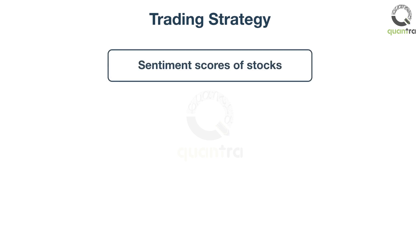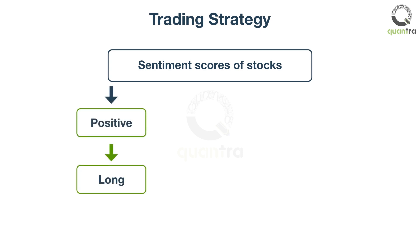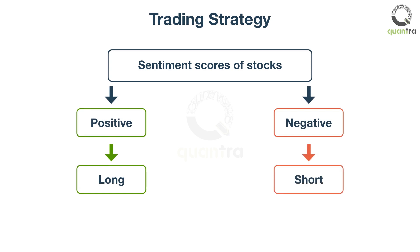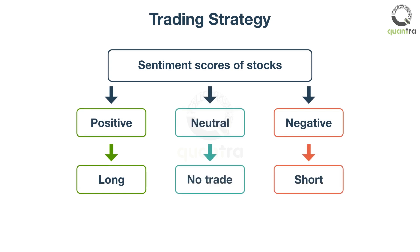In this initial set of studies, we use the mean of the sentiment scores to go long or short. For example, if the mean of the sentiment data on a given day was net positive, we go long; if negative, we go short; and if the balance of sentiment is neutral, we do not trade.